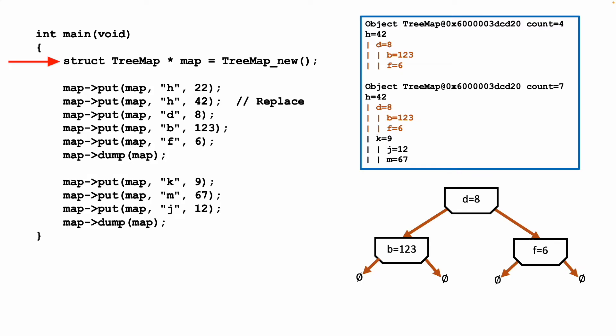Think about how dictionaries work: you say x['hello'] equals something — there's either going to be a hello key or not. If not, we put it in; if there is, we update it. That's what this code does. We create a new tree map, put h equals 22, then h equals 42 which replaces h, then d equals 8, b equals 123, f equals 6. I did this somewhat in order so it doesn't get too long on the page, then do a dump. When I first wrote this code, I had map put and map dump alternating so I could see what it does.